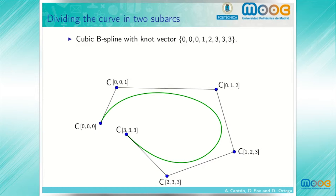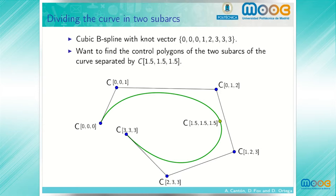Consider a cubic B-spline with knot vector 0, 0, 0, 1, 2, 3, 3, 3. That means the B-spline curve is defined for t between 0 and 3, the third and third-to-last knots of the knot vector. We want to find the control polygons of the two sub-arcs of the curve separated by the point on the curve for t equals 1.5. So we want to find the control polygon of the sub-arc from t equals 0 to t equals 1.5, and the control polygon of the sub-arc from t equals 1.5 to t equals 3.